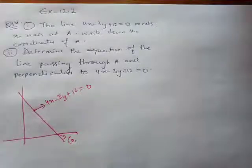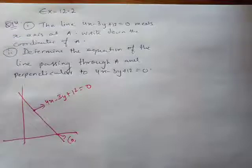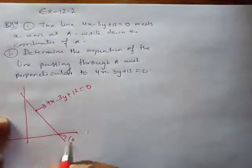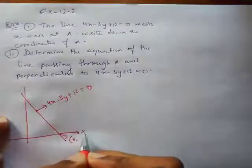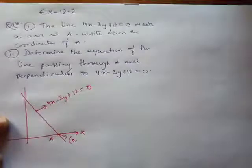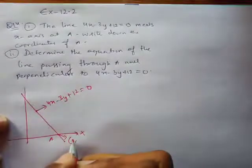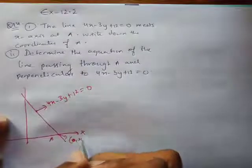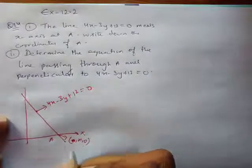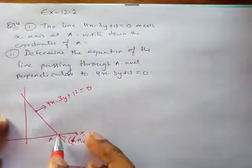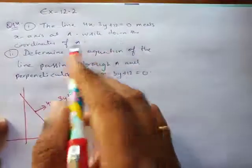Question number 14 first part says: the line 4x minus 3y plus 12 equals to 0 meets the x-axis. I have drawn this line and it meets the x-axis at point A. If it's meeting the x-axis at point A, the coordinates are going to be x comma 0. Now write down the coordinates of A.